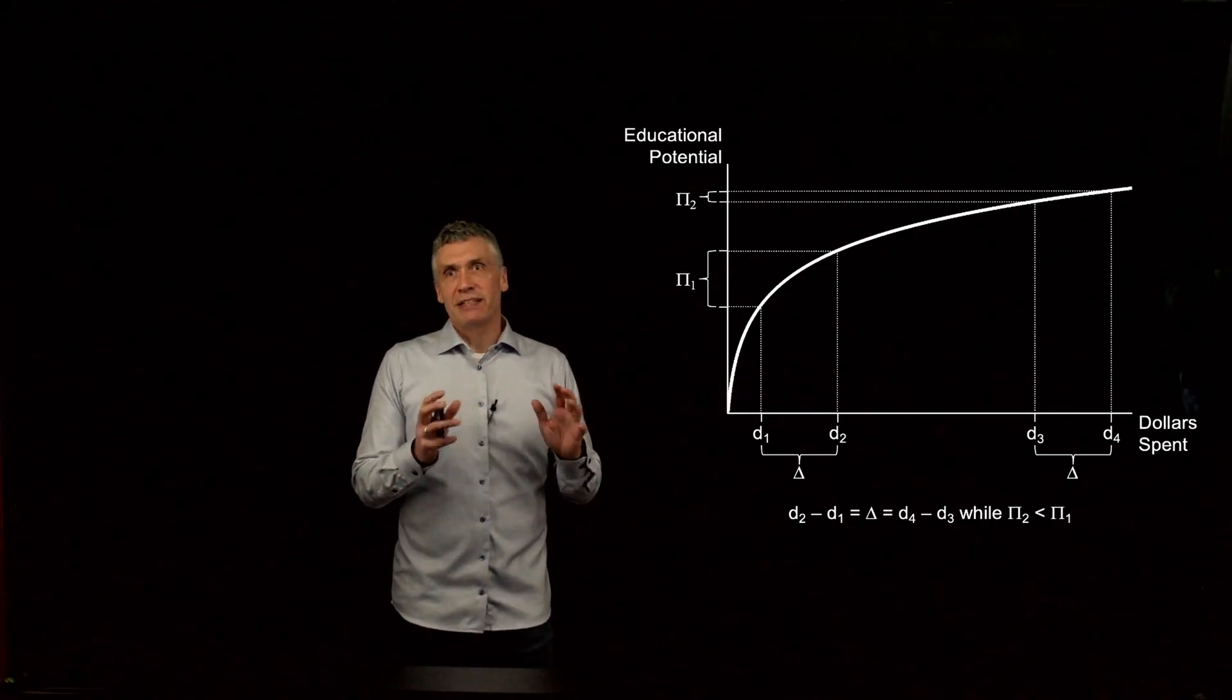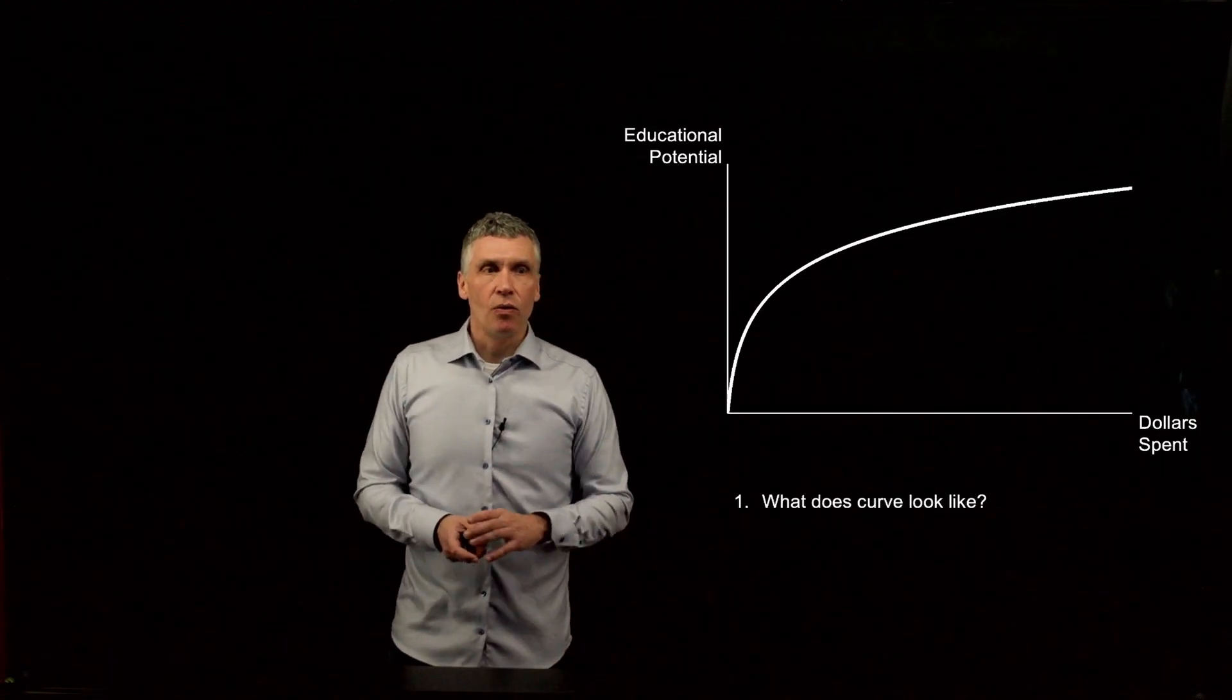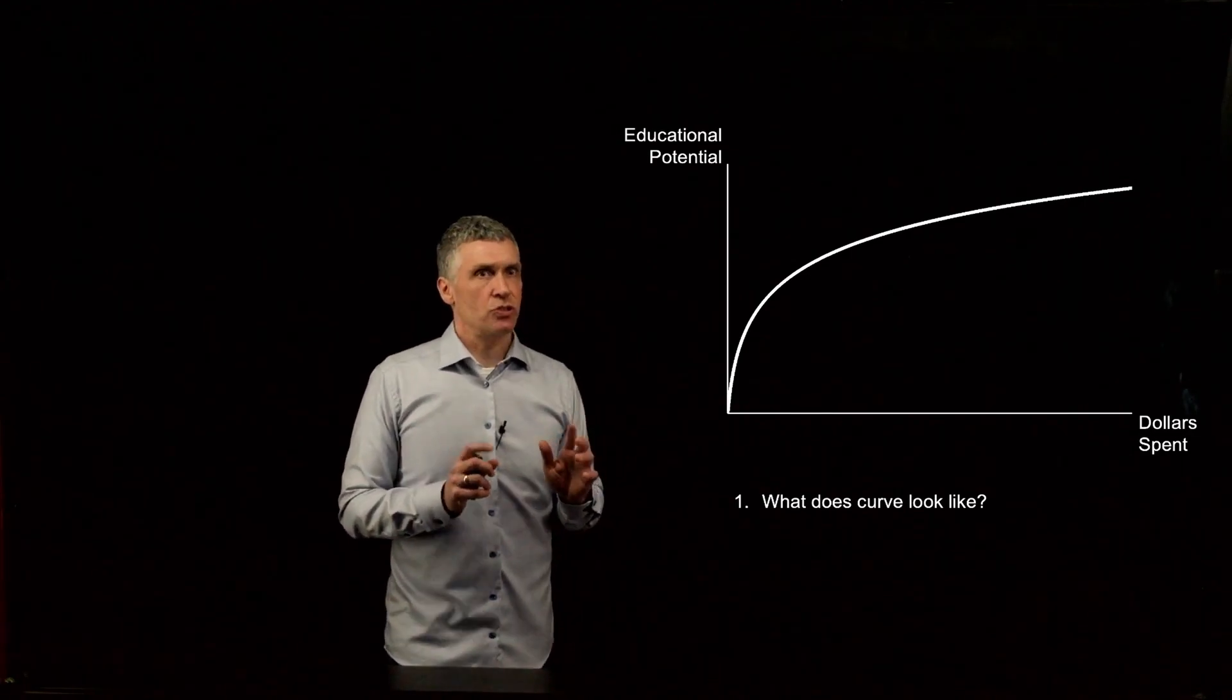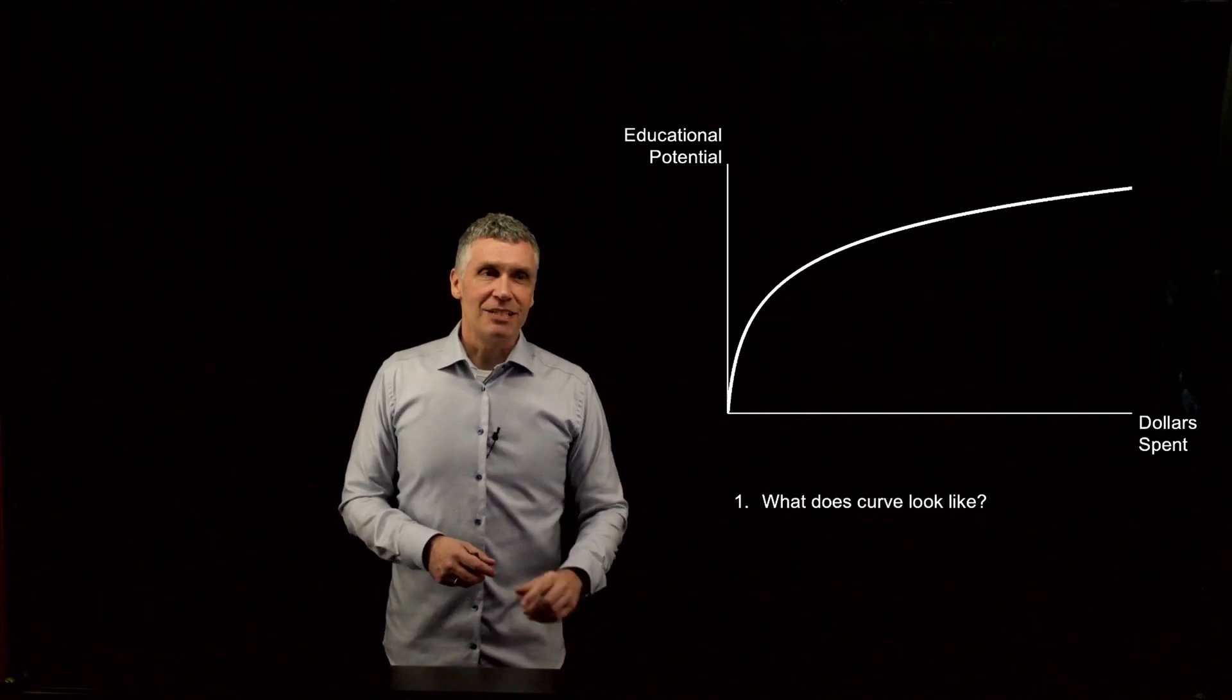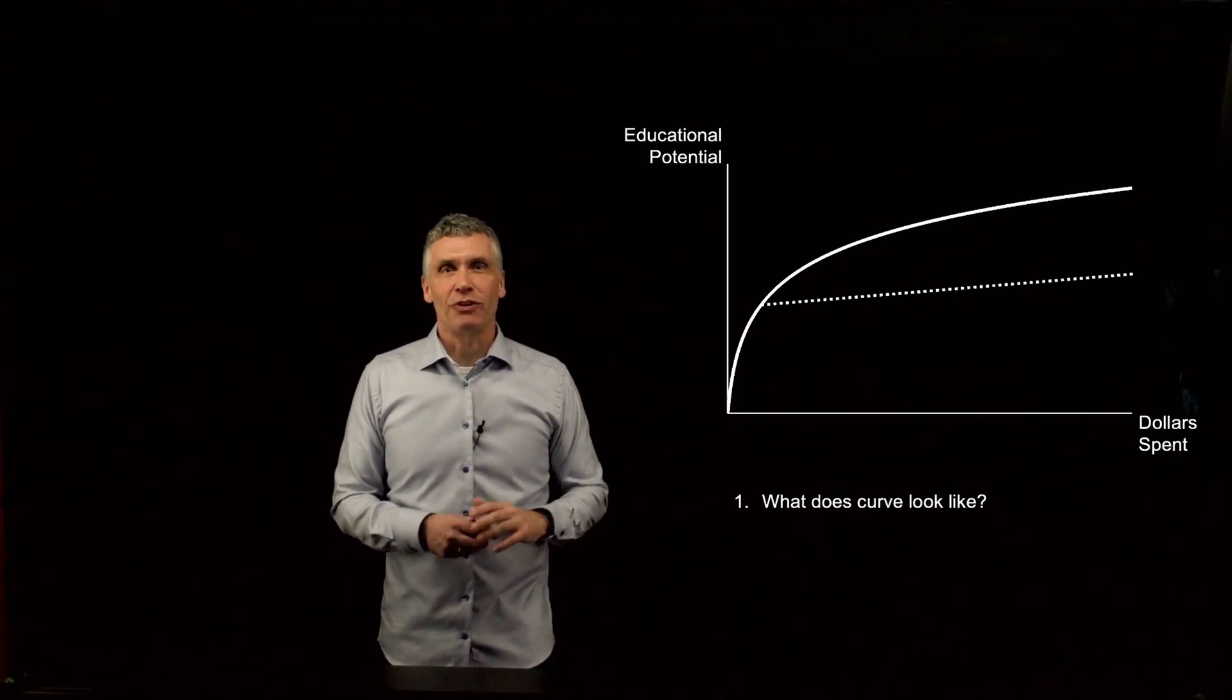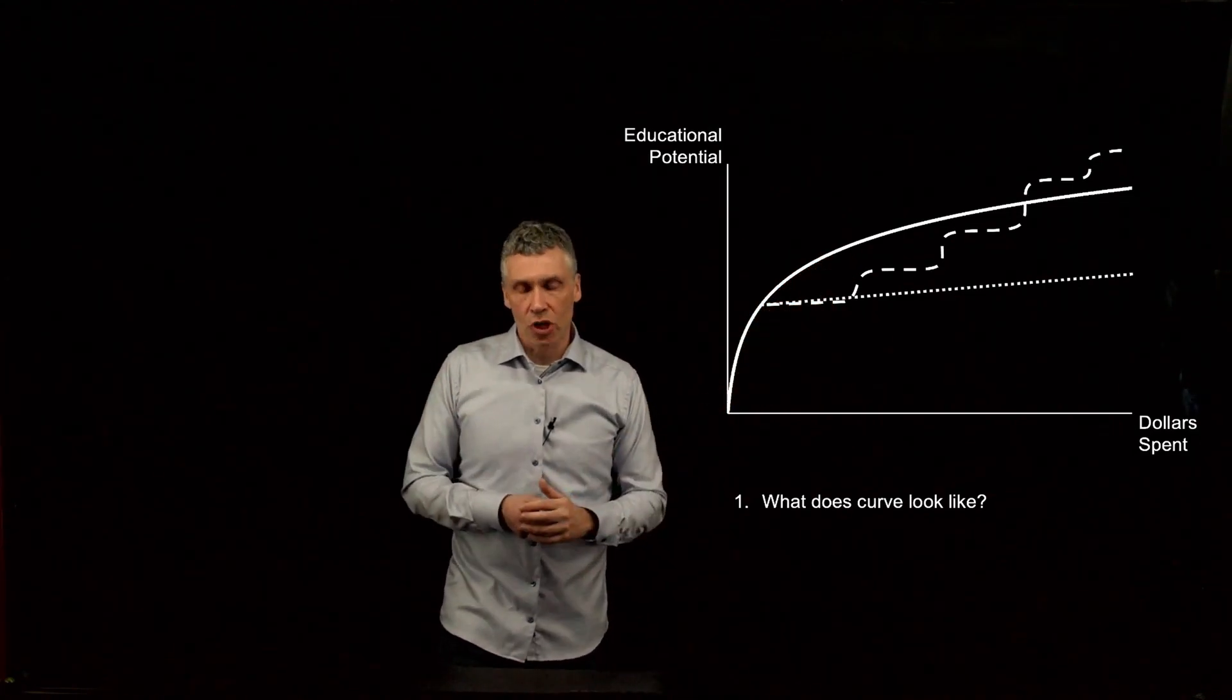So I think this idea that there is marginal returns to the studio is quite straightforward. But what's interesting, I think, to think about in a studio like this is, what does this actually look like? Like, what does the curve look like? Is it this sort of smooth? Or is it potentially that there's an initial jump and then things sort of increase at some constant rate? Or is it that there is some sort of step functions? What does the studio actually look like?